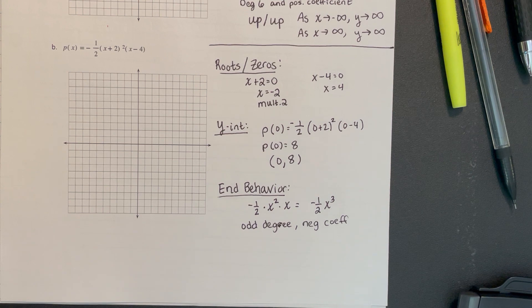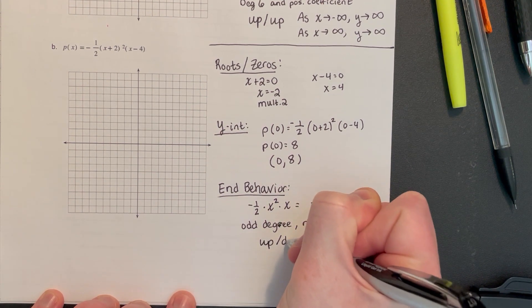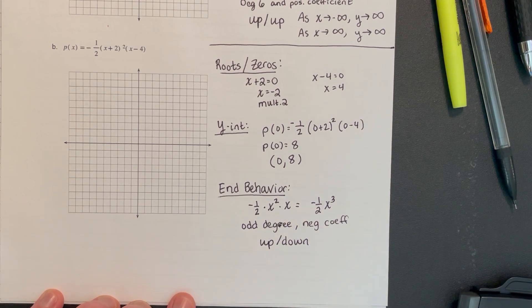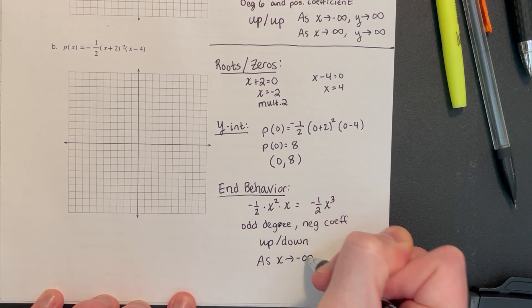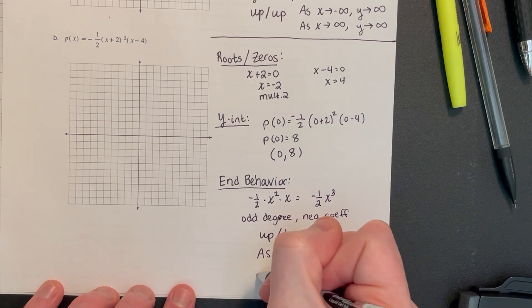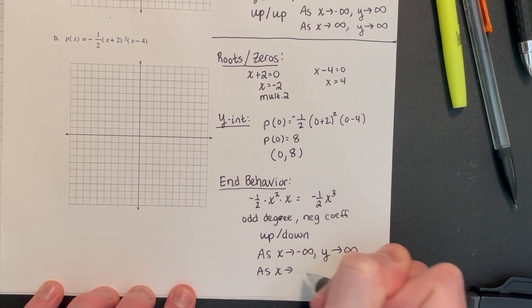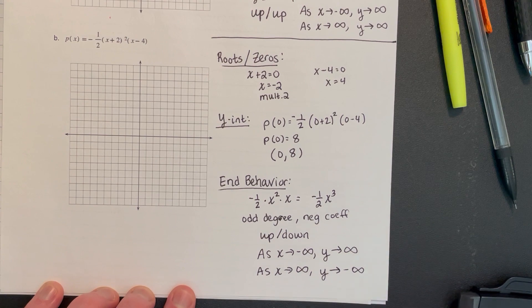So our end behavior should be up-down. Formally, that would say as x goes to the left, which is negative infinity, y goes to positive infinity, they're going up. As x goes to the right, towards positive infinity, y goes down to negative infinity.